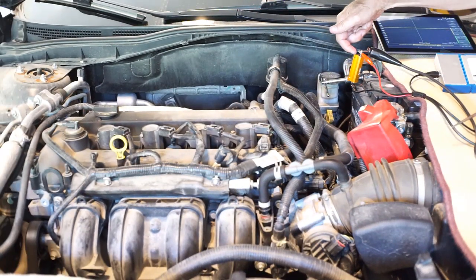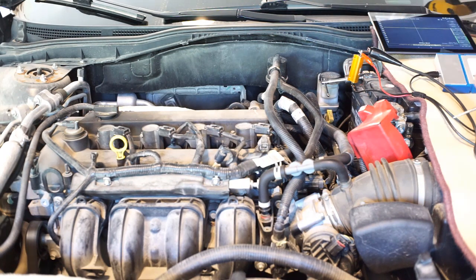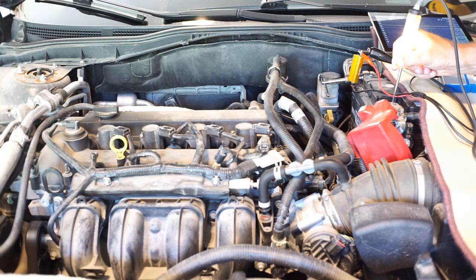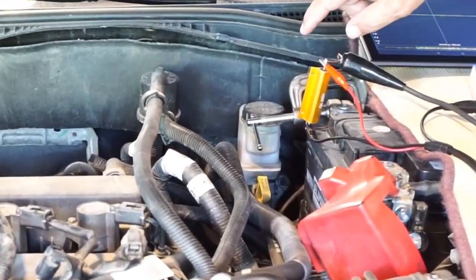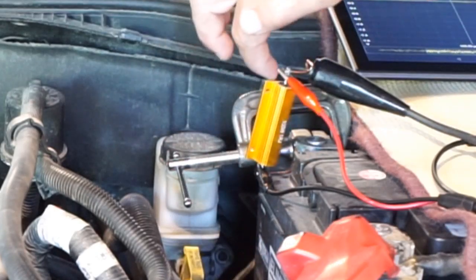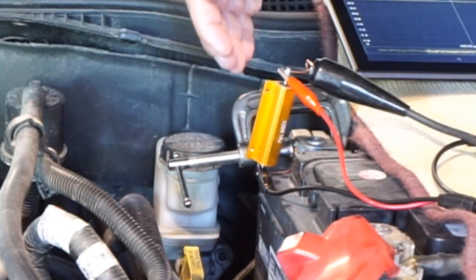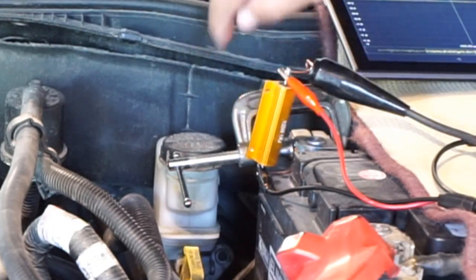I've secured this one ohm resistor to the negative terminal of the battery so it's in series with the test light. The oscilloscope will measure the voltage drop across that one ohm resistor, so if we get one volt drop that means there's one amp going through the circuit.